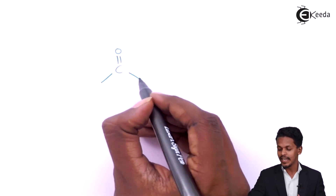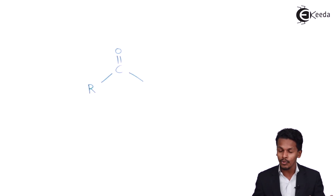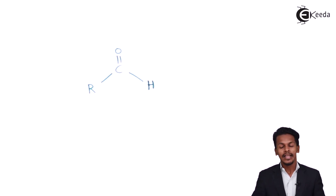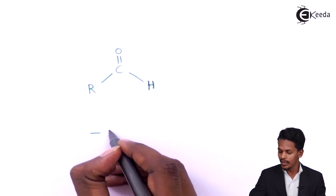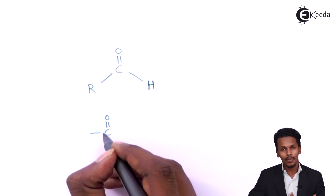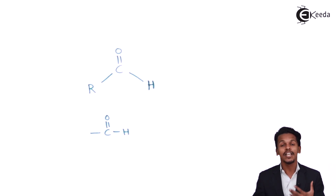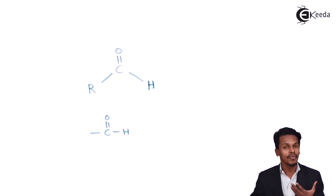The next two valencies are occupied: one by an alkyl group or an aryl group, and the other by a hydrogen atom. So this is what an aldehyde is. The general formula for an aldehyde has the functional group C double bond O and H. This aldehyde group can also be called a formyl group.